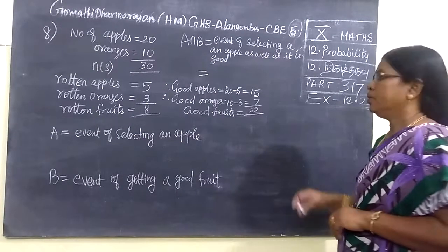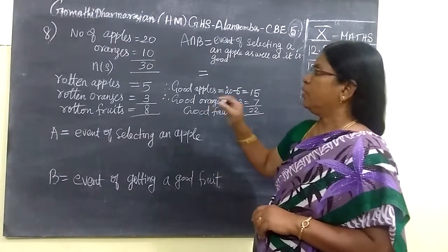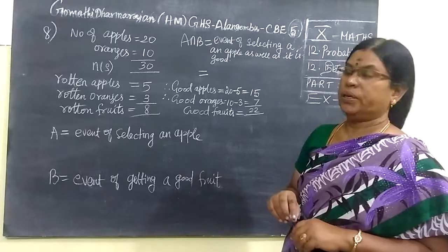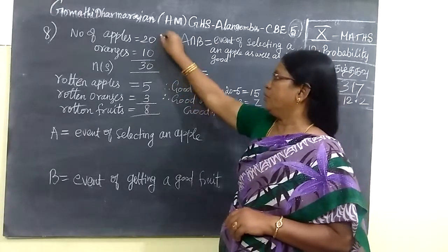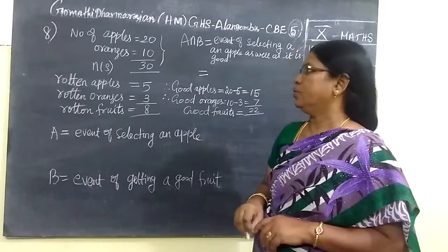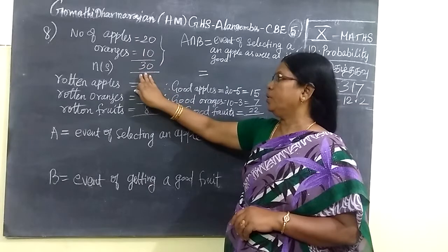Now we want to see part 370. We are given number of apples equal to 20, oranges 10. So N of S is 20 plus 10, 30. We are given apples, oranges. So total fruits, 30.